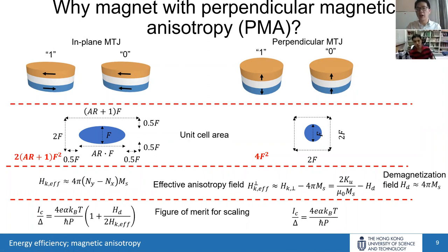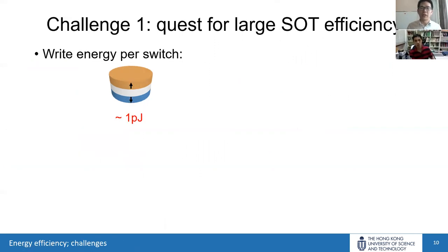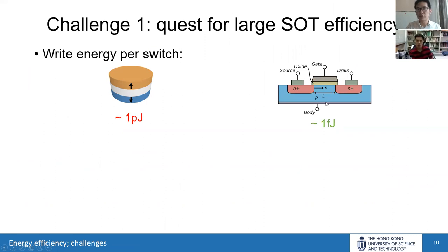We still have two important challenges. First is SOT efficiency and ultimately energy efficiency. For typical MTJ switching, one picojoule is consumed, but a CMOS transistor consumes only about one femtojoule per switch. If we embed many MTJs into a CMOS chip, we generate a lot of heat, making scaling worse. CMOS is already very hot, and more MTJs make it hotter. Looking at the fundamental equations for STT and SOT: for STT, the efficiency is fundamentally limited by the spin polarization ratio at the Fermi level, which cannot exceed one.